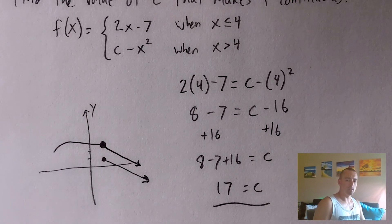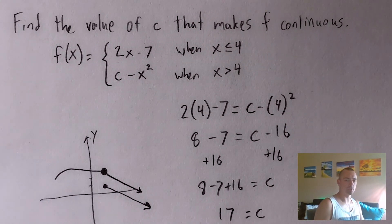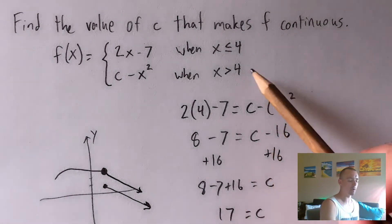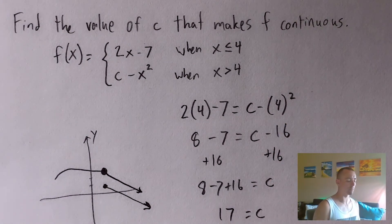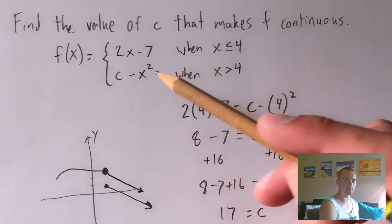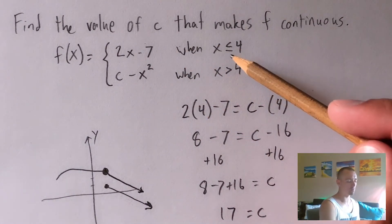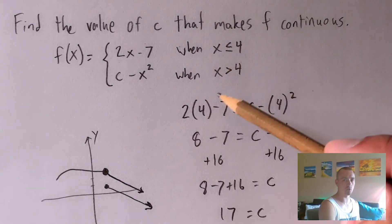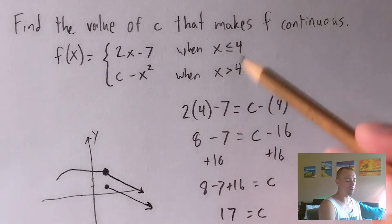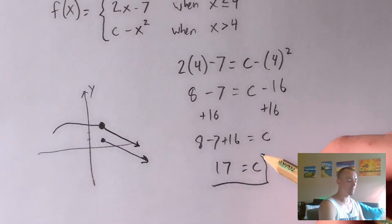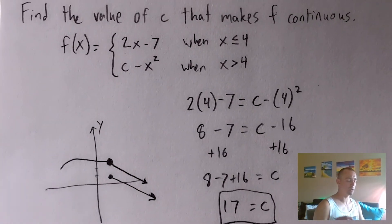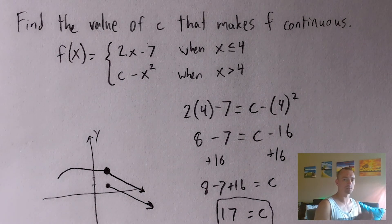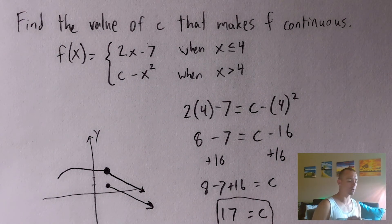So c equals 17 will make sure that this piecewise function is continuous at x equals 4. Since we already confirmed that each piece is continuous within its entire domain — for all x less than 4 and for all x greater than 4 — c equals 17 makes the piecewise function continuous everywhere: it covers all x less than 4, x equals 4, and all x greater than 4. So c equals 17 is the answer.